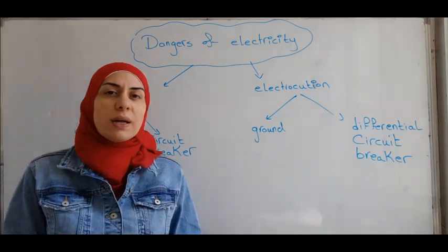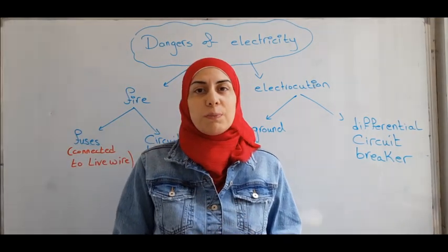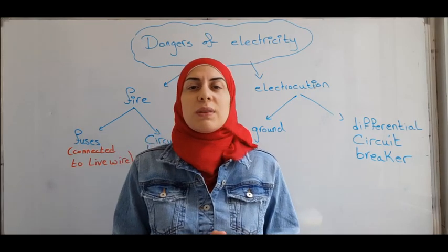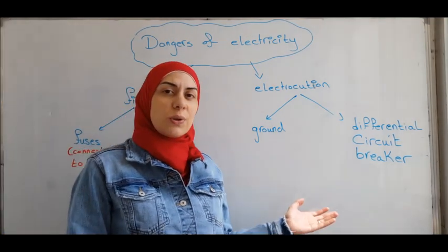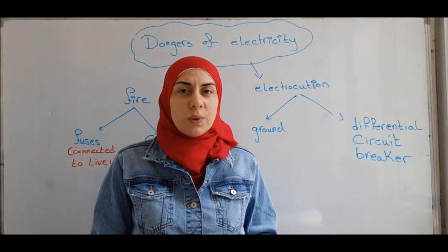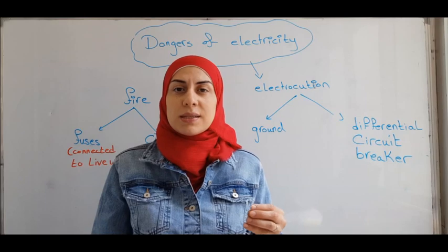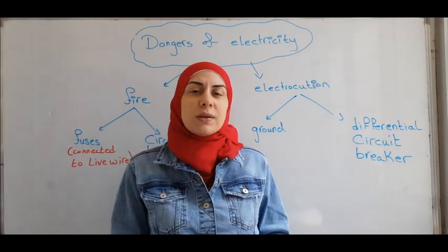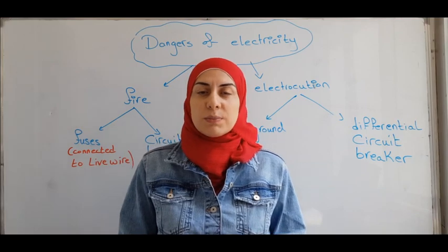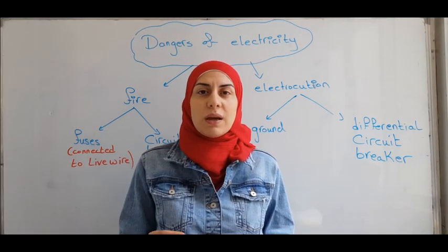The circuit breaker, on the other hand, protects the whole house and all the appliances. It is released when the main current exceeds a given value. To protect ourselves from electrocution, we can use the ground wire. It carries all the excess charges to the ground. The differential circuit breaker detects any leakage of current because it's sensitive to the variation of current between the live and the neutral.